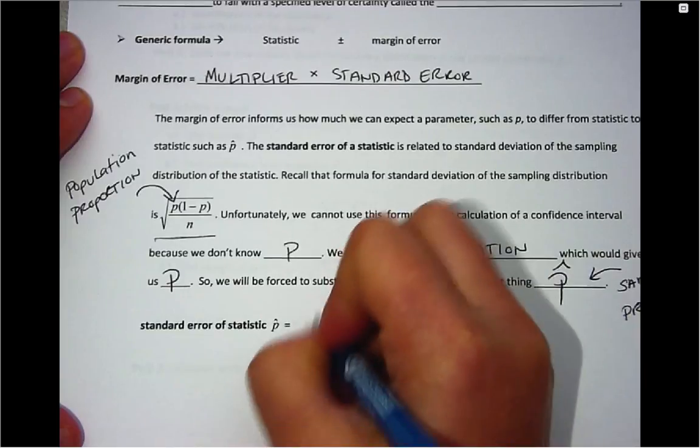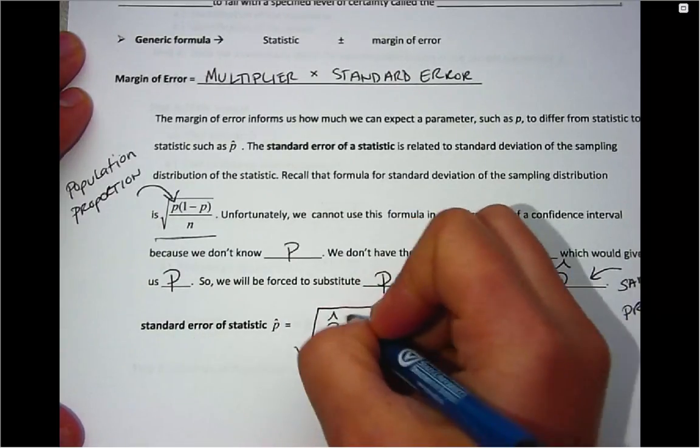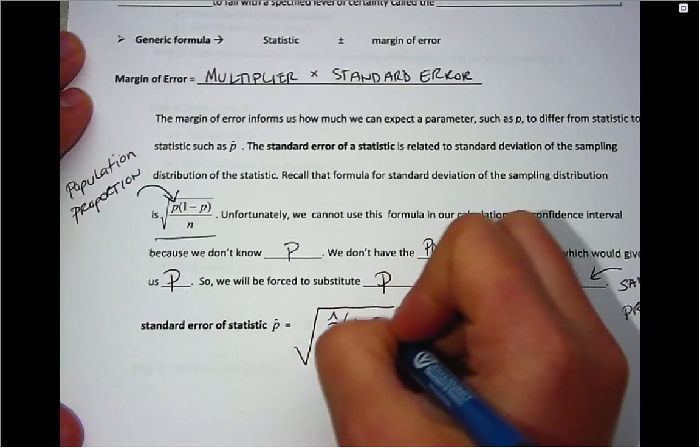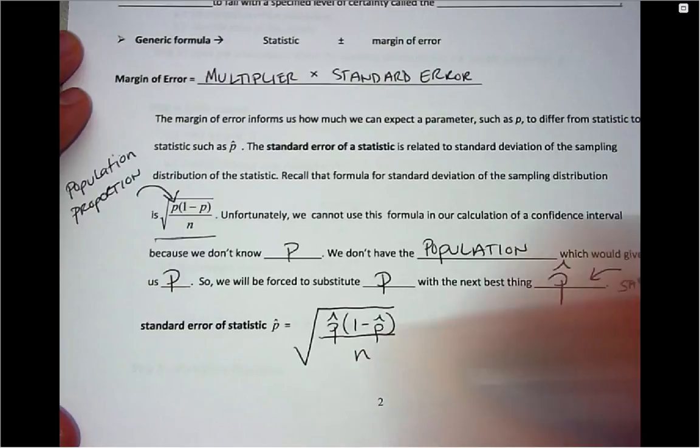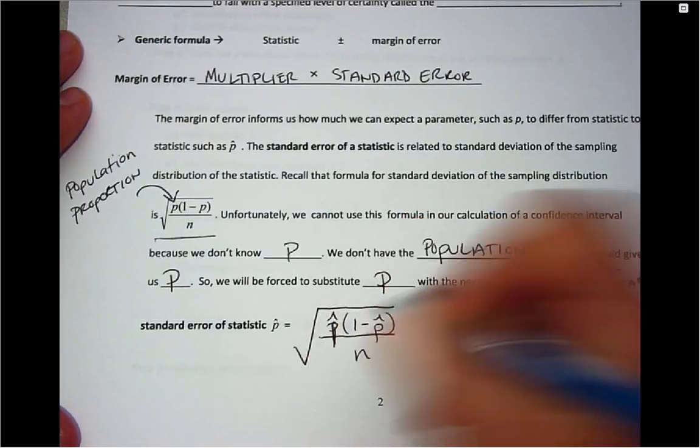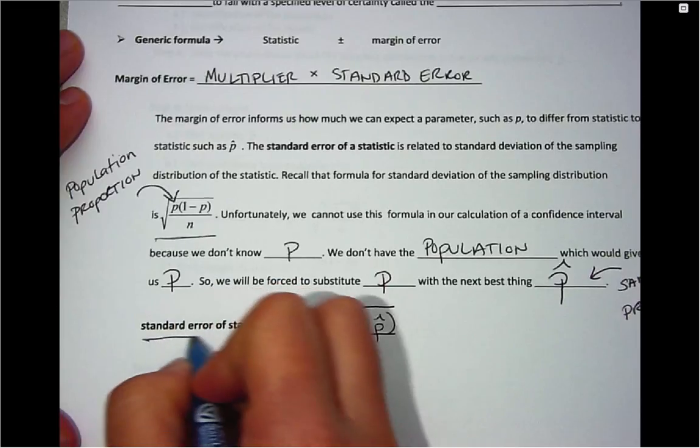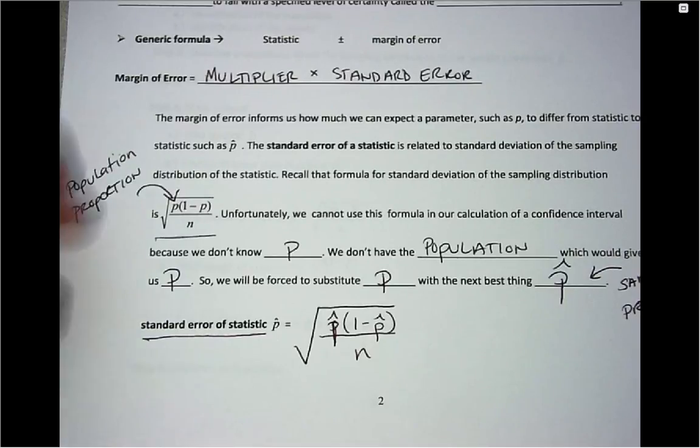So in the formula that's shown up here, we're going to replace all of the p's with p-hats, which would give us the following. When you make that substitution and you put in p-hat in place of p, the term is then no longer standard deviation, but standard error of the sampling distribution of p-hat.